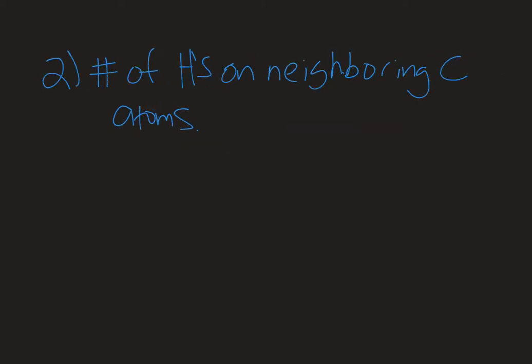A second piece of information that we can obtain from the proton NMR is the number of protons on the neighboring carbon atom. We can do this using the n plus 1 rule and I'll go over this in more detail in a subsequent video, but essentially this has to do with splitting. And that is really just what does our signal look like. So a signal might just look like one peak. This is called a singlet and that happens when there's no neighbors.